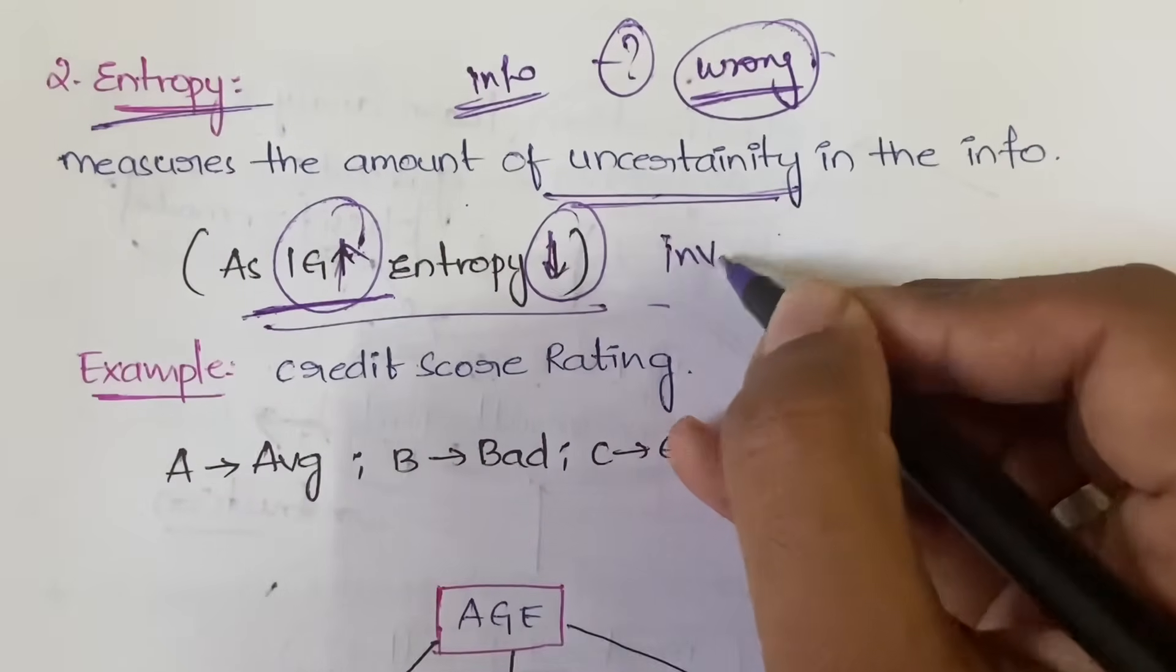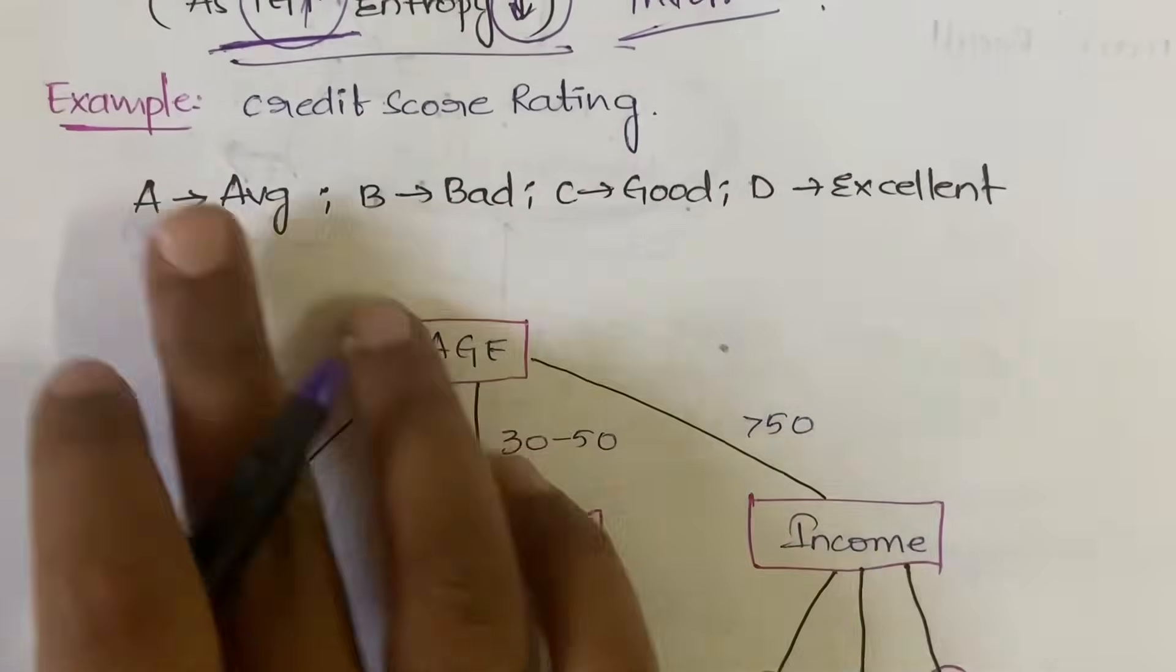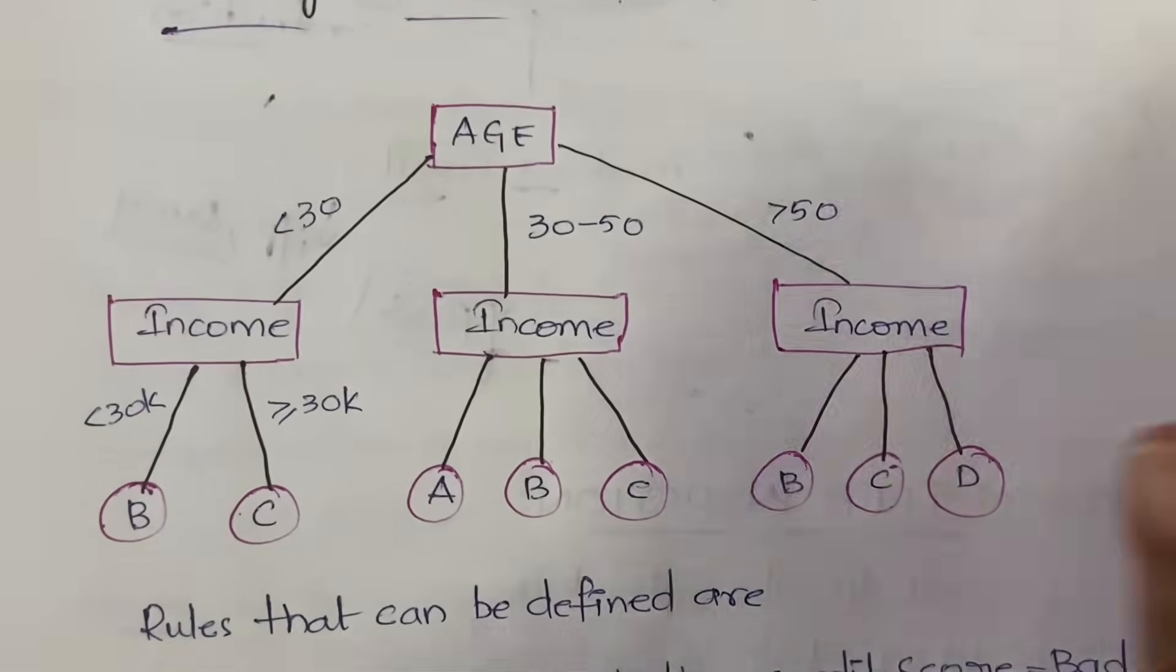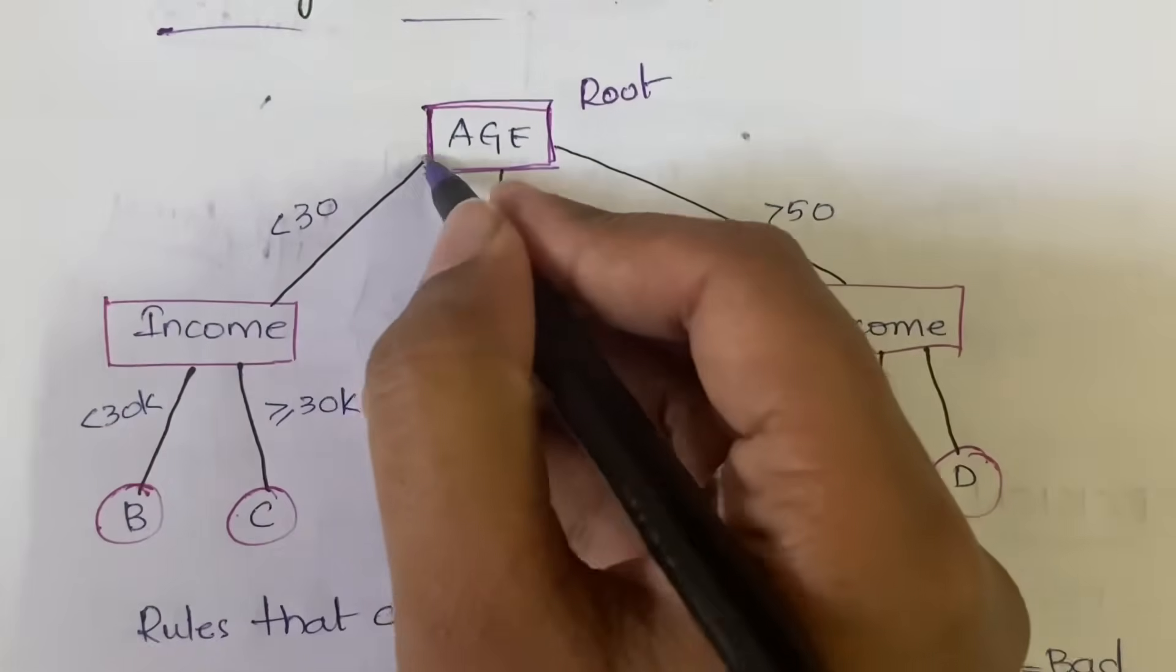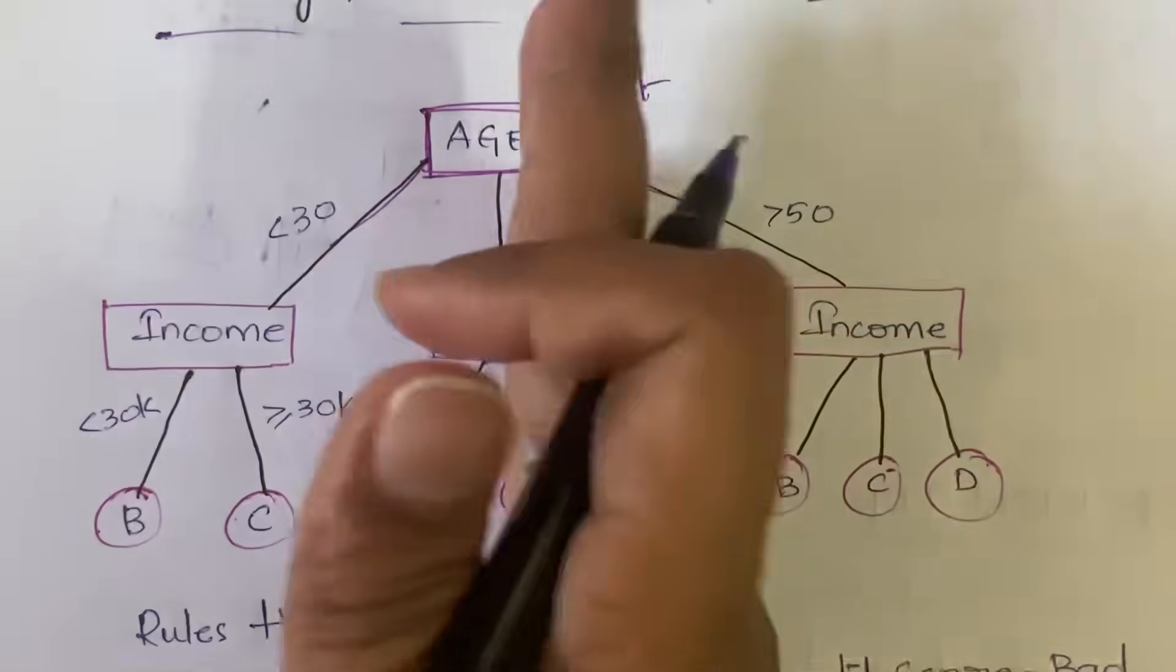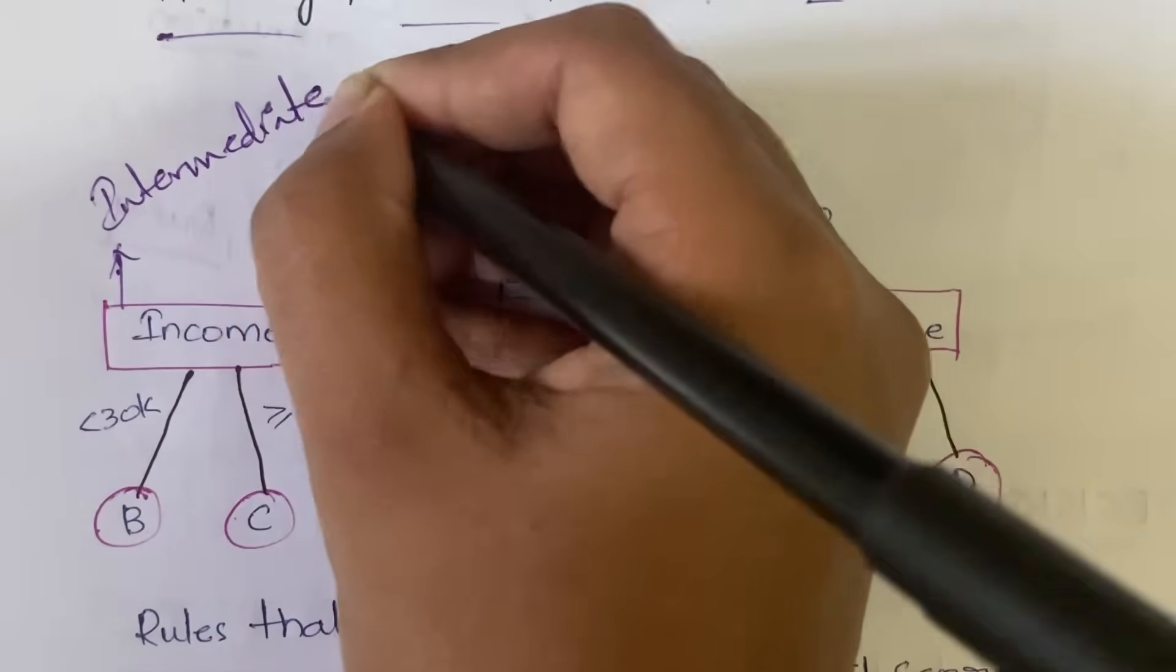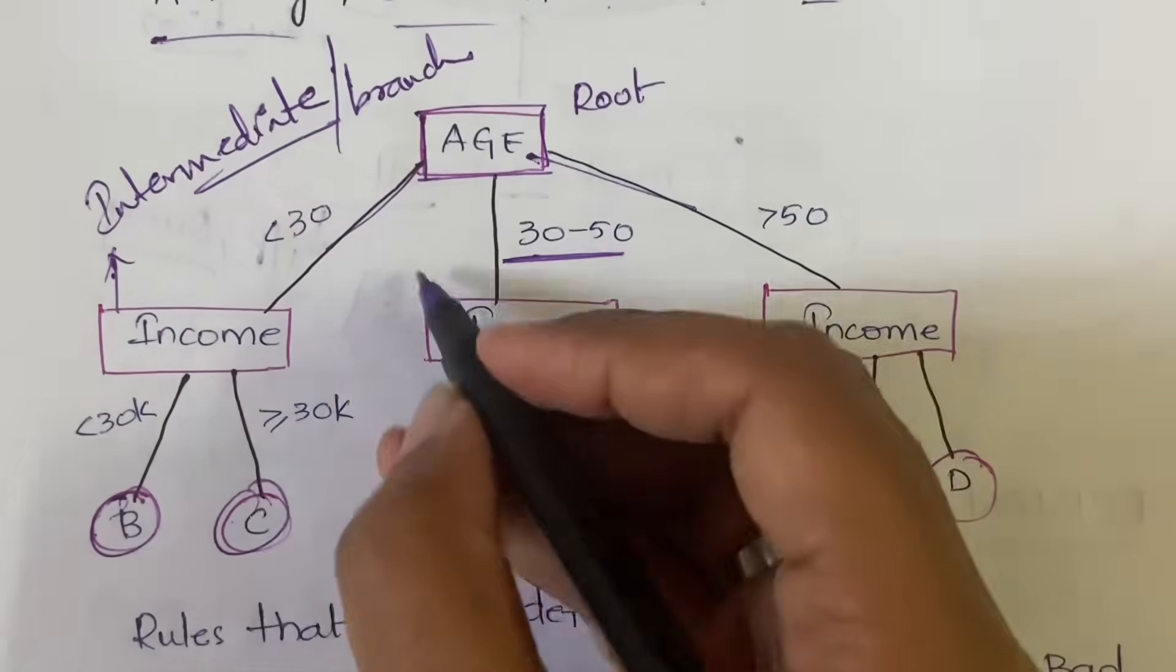For example, decision tree credit score rating: A means average, B is bad, C is good, and D is excellent. We have constructed a decision tree. First the root node is age, so based on age we are classifying into below 30 years, between 30 to 50 years, and above 50 years. We have divided into three categories. These are the intermediate nodes or you can say branch nodes, and these are the leaf nodes.